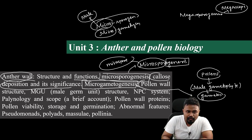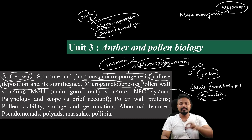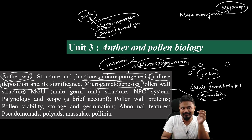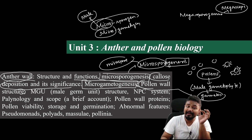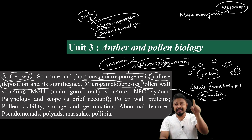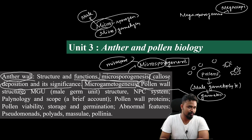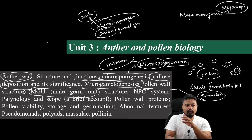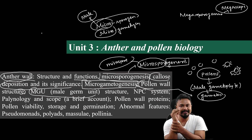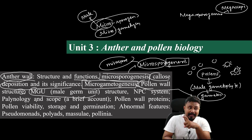Next, we discuss pollen wall structure. Pollen structure shows very high variation — there are interesting photographs showing this diversity. The pollen wall is very different across types, with different layers and different chemicals involved. We also discuss the male germ unit, which germinates on the stigma of the female reproductive part.